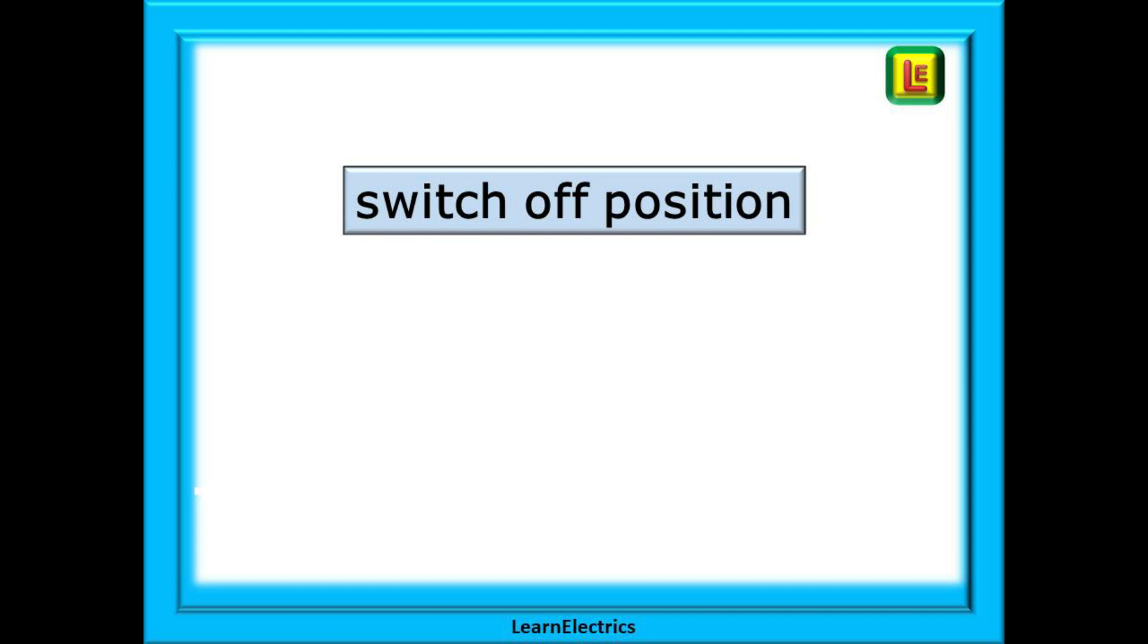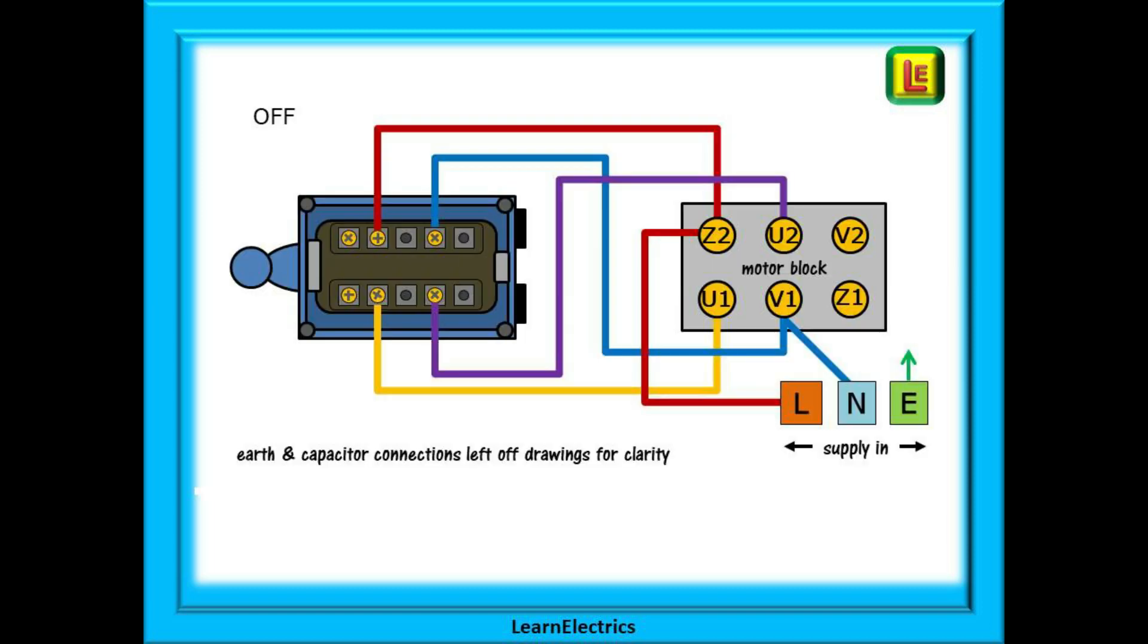Let's now look at the wiring route in the various switch positions starting with the off position. In the off position none of the contacts are connected to each other and in that position the motor is turned off. There is however still live electric inside the motor and the switch but there is no longer a completed path for current to flow.